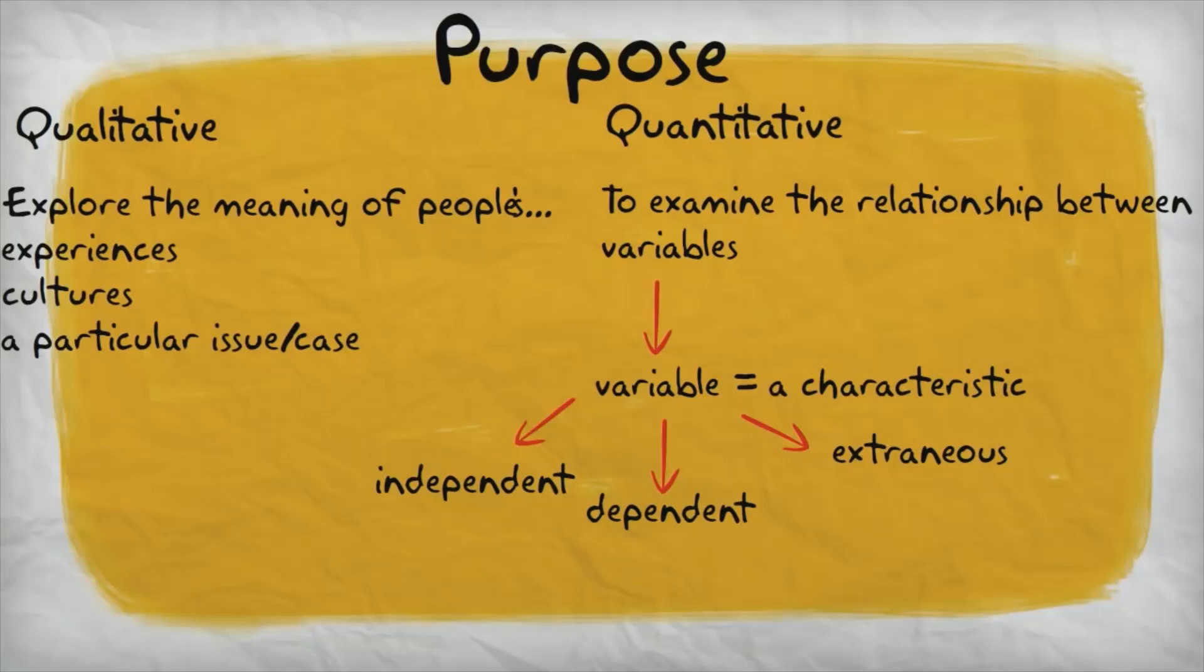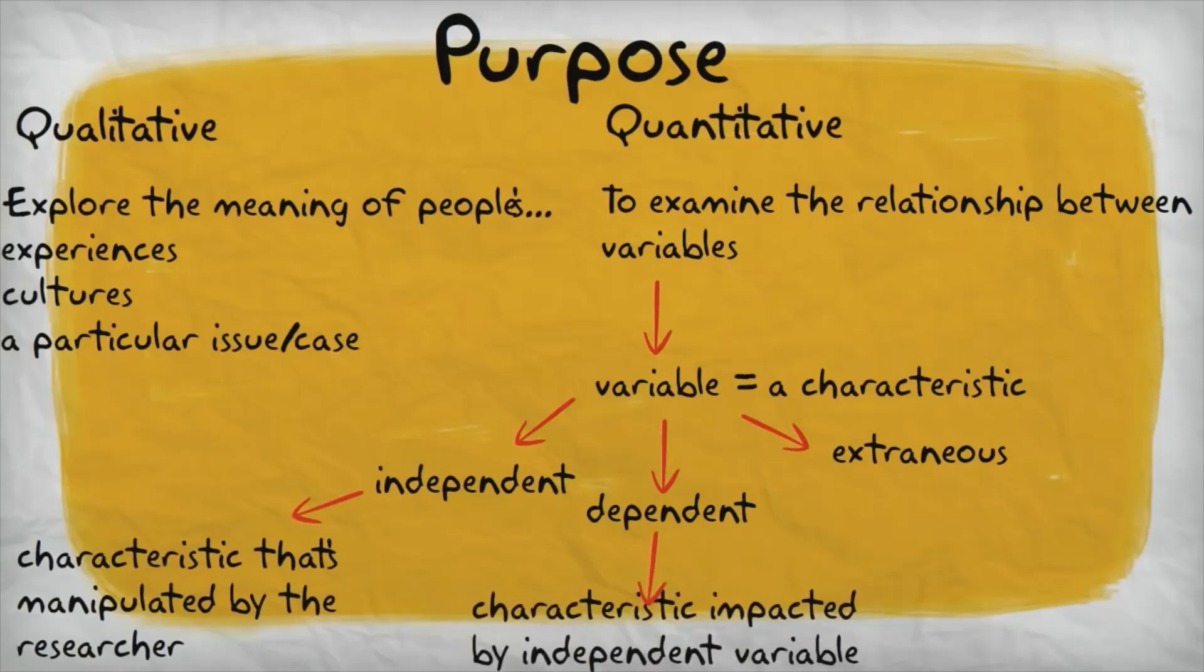Independent variables are variables or characteristics that are manipulated by the researcher. Dependent variables are characteristics that are impacted by that manipulation of the independent variable. Extraneous variables are variables that are extraneous to what the researcher is really trying to focus on, and they're usually demographic information such as age, sex, race, ethnicity, things like that.